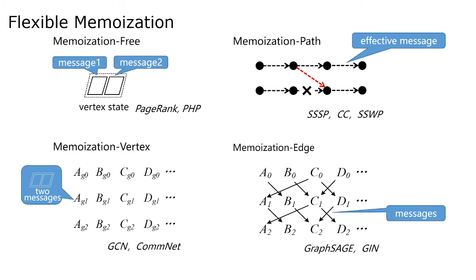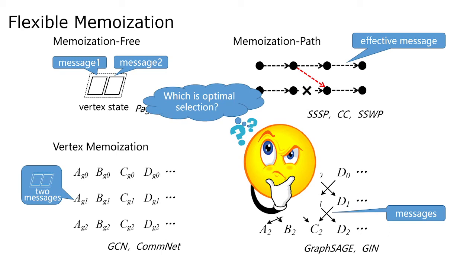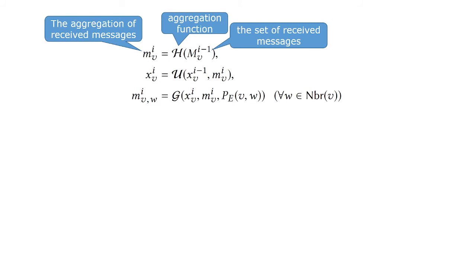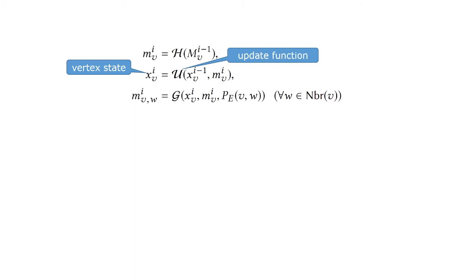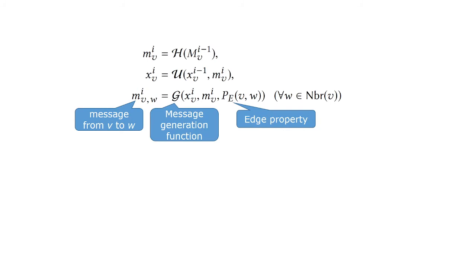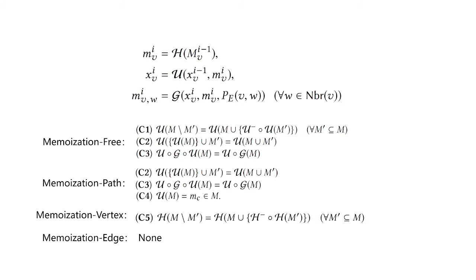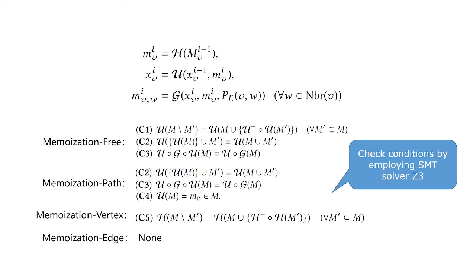The remaining question is how to choose the optimal memorization policy automatically. Based on a generic vertex-centric model, we provide sufficient conditions for each memorization policy. In the general vertex-centric model, there are three functions: the aggregation function H for aggregating received messages, the update function U for updating the states of each vertex, and the generation function G for generating messages to neighbors. Given the vertex-centric model, we identify the sufficient conditions of each memorization policy, as shown in this slide. Ingress chooses different memorization policies by checking whether these conditions hold, which can be done automatically by employing Microsoft's SMT solver Z3.